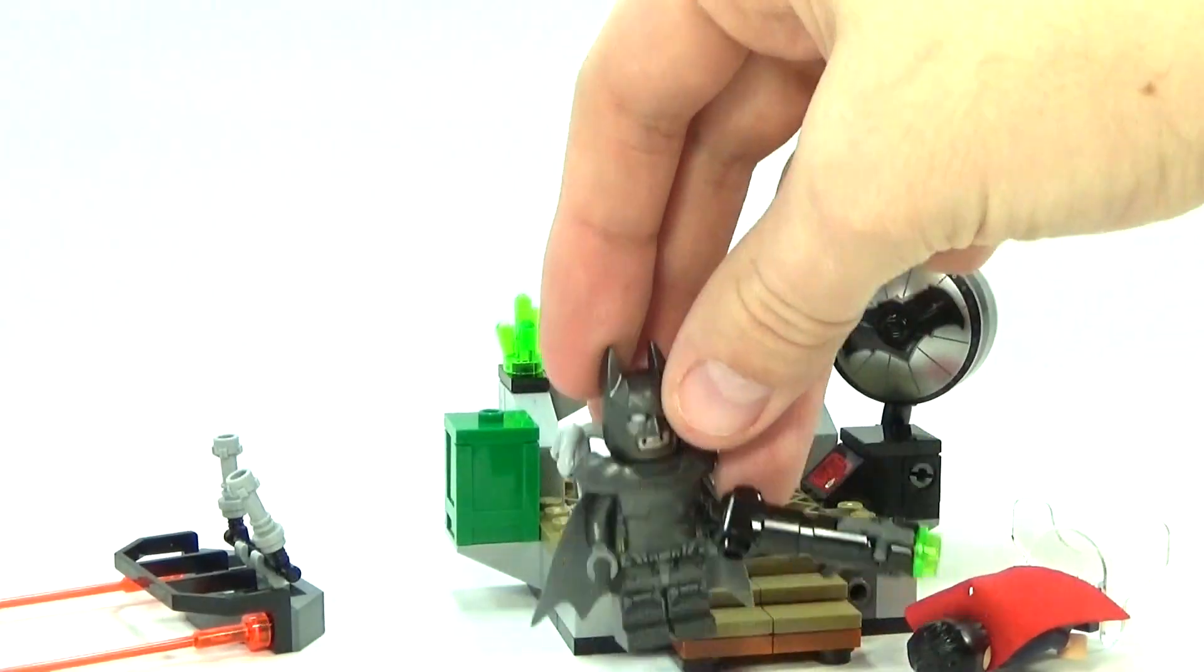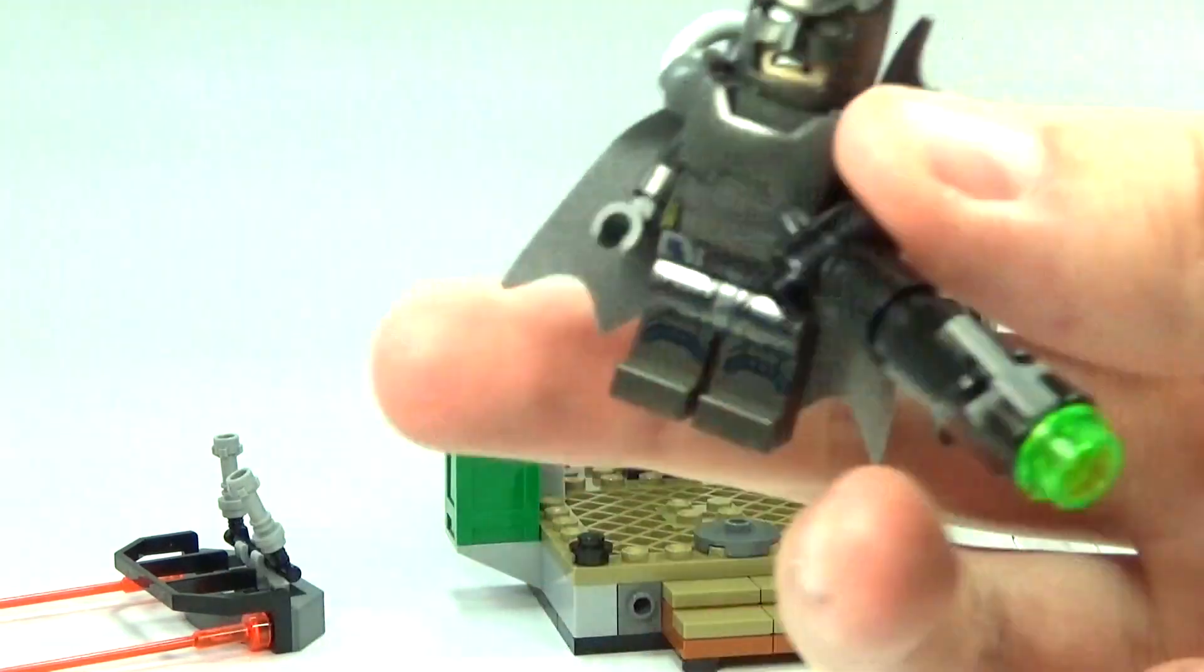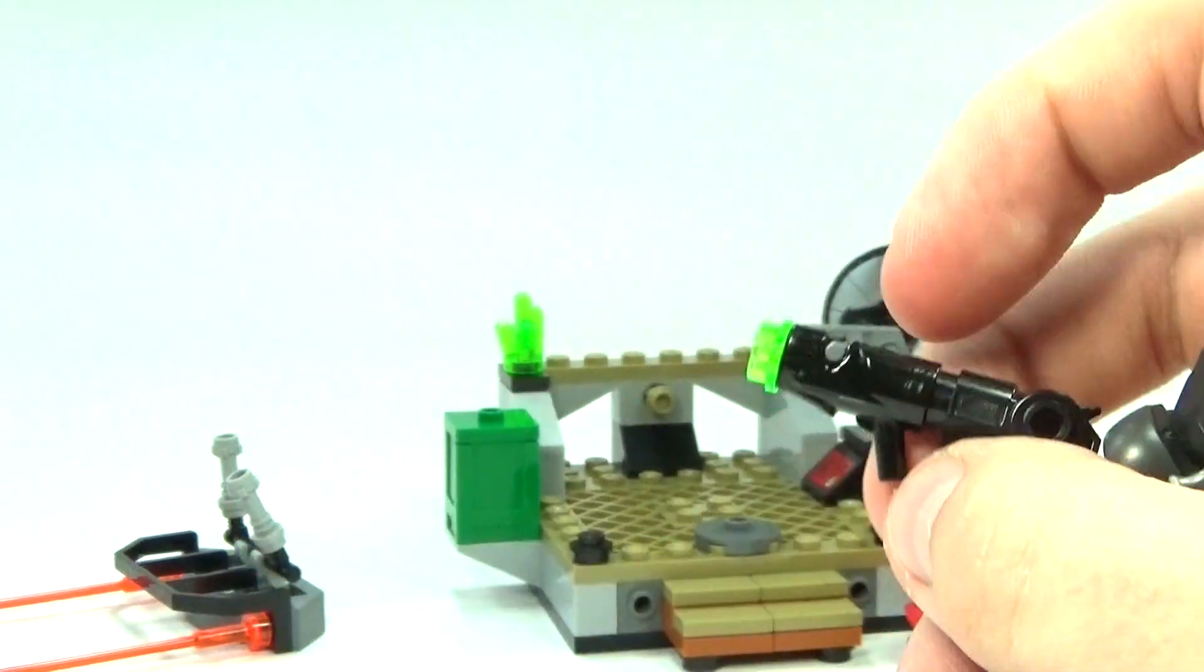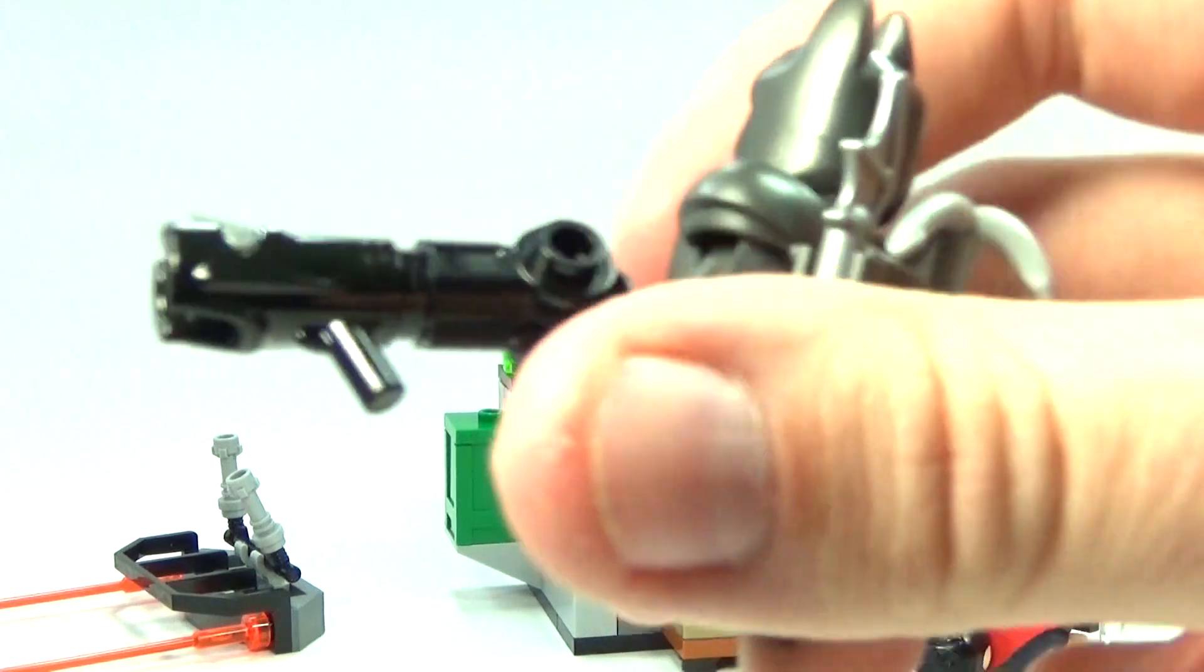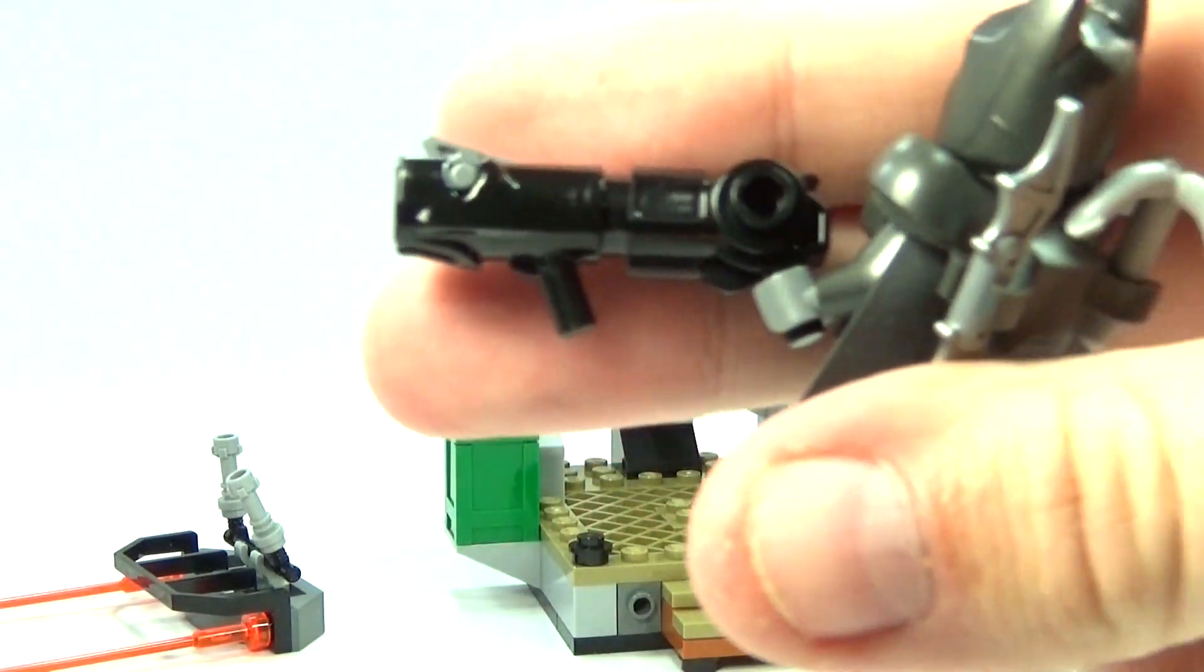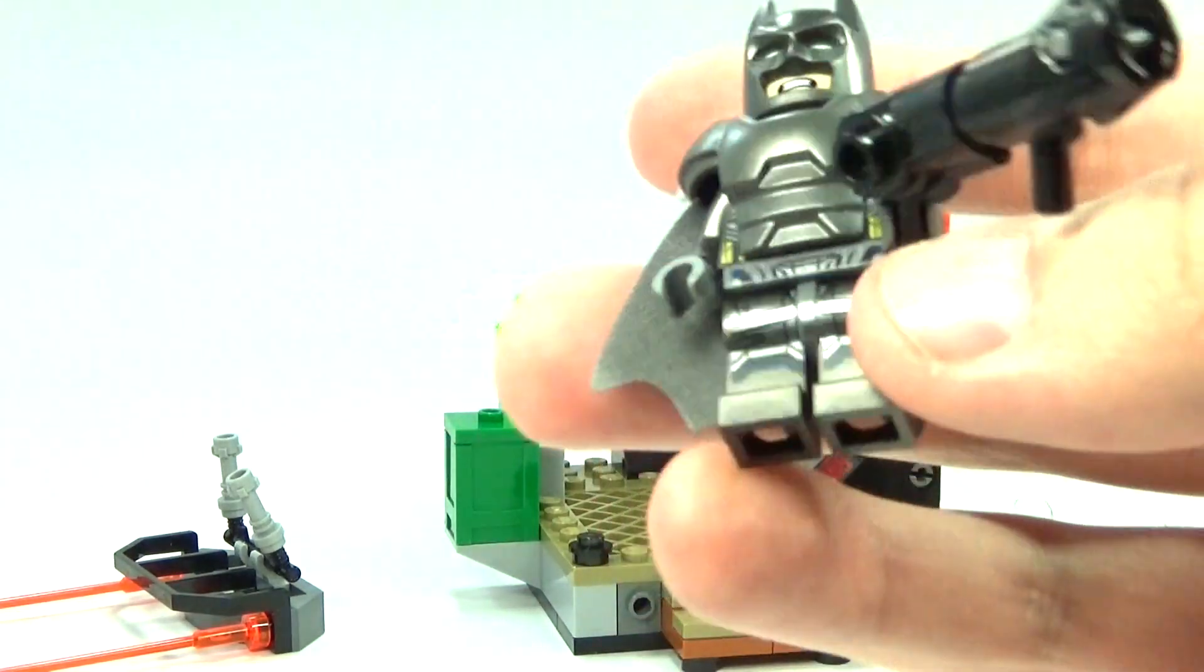And of course Batman's over here like, I will defeat you Superman, with his kryptonite gun. And you can see it is a really powerful kind of stud shooter there. Really long, they kind of designed it a little longer than they do normally.